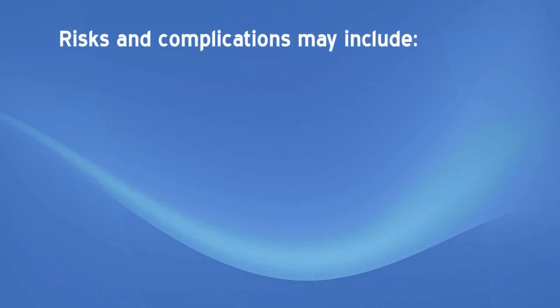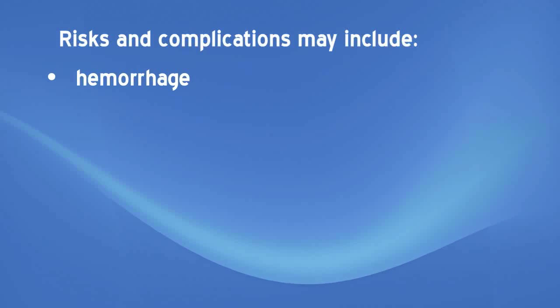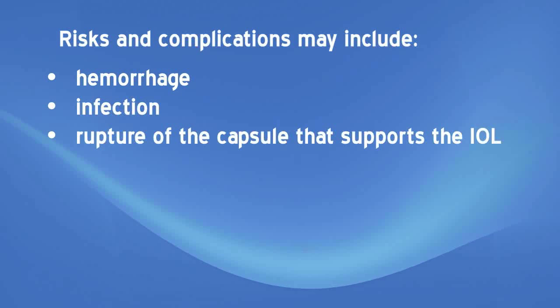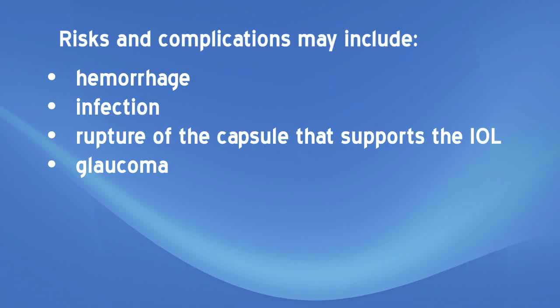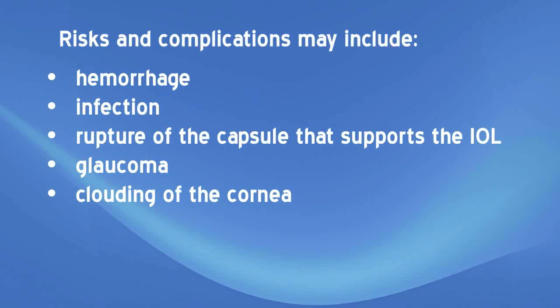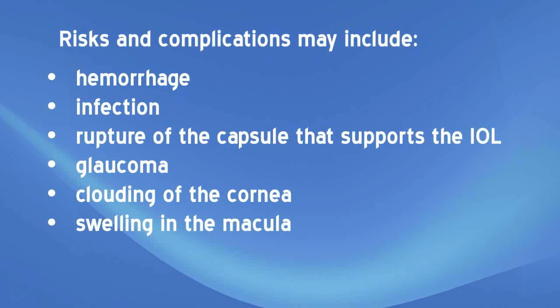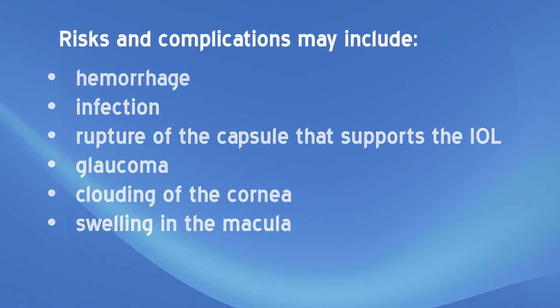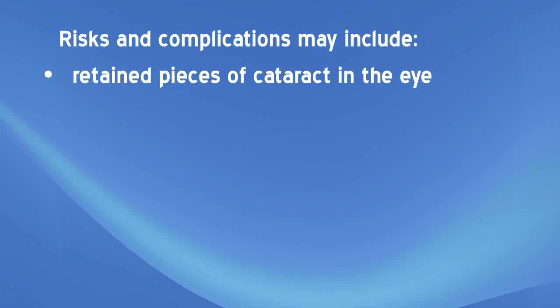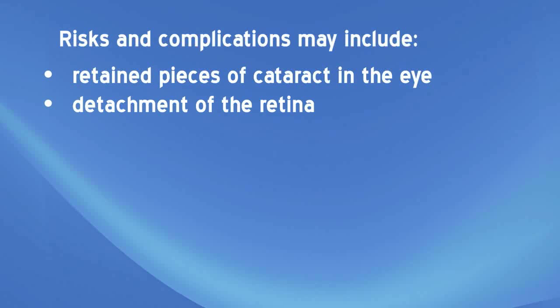Risks and complications associated with cataract surgery and lens implantation may include hemorrhage, infection, rupture of the capsule that supports the IOL, glaucoma or increased pressure in the eye, clouding of the cornea, swelling in the macula — the central area of the retina, which usually improves with time — and retained pieces of cataract in the eye which may need to be removed surgically.